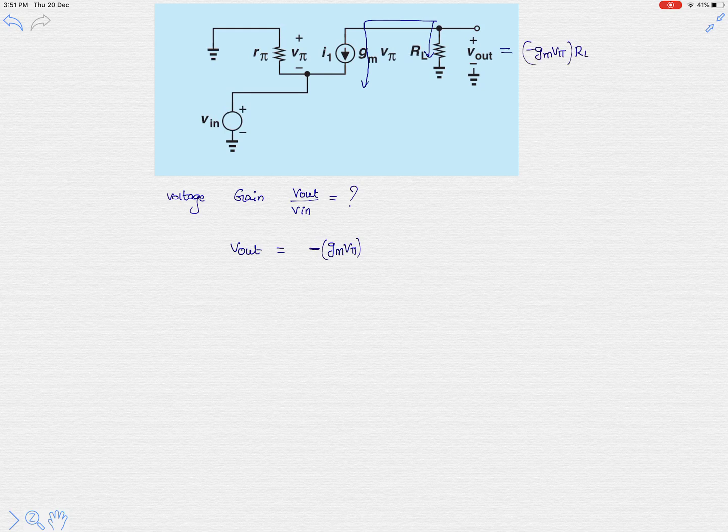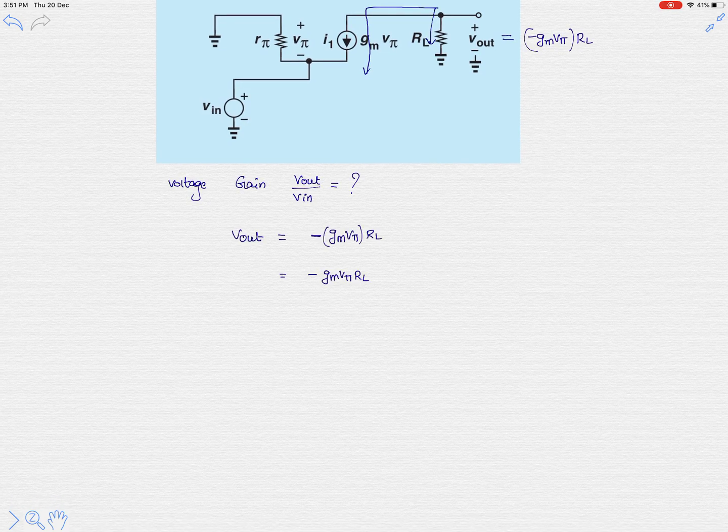So this is simply minus gm v pi and RL. And from input side, if you write KVL equation in the shown direction like this, in the shown direction above.